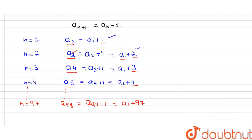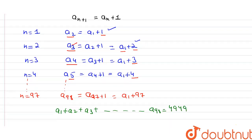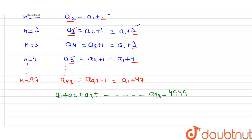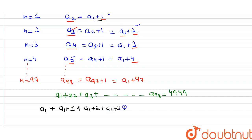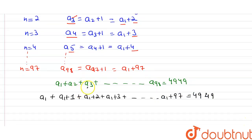We are given that a1 + a2 + a3 + ... + a98 = 4949. Substituting the values: a1 + (a1+1) + (a1+2) + (a1+3) + ... + (a1+97) = 4949. Since a1 appears 98 times, we get 98·a1 + (1 + 2 + 3 + ... + 97) = 4949.